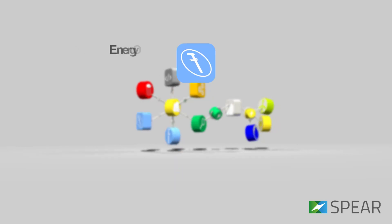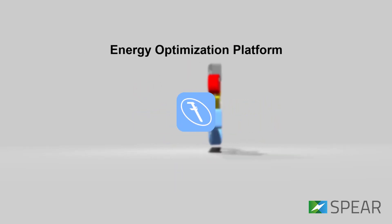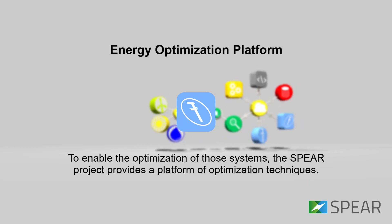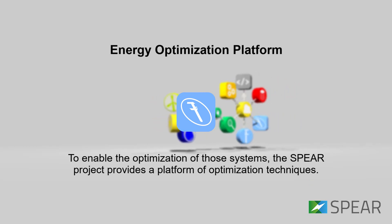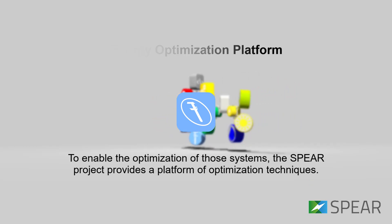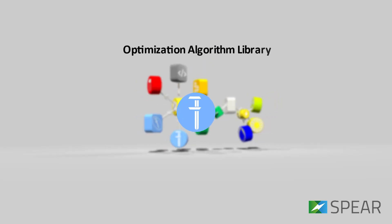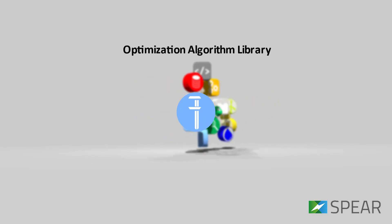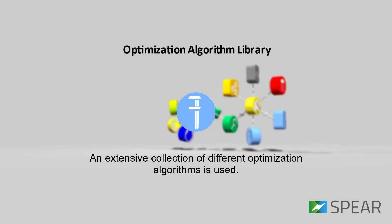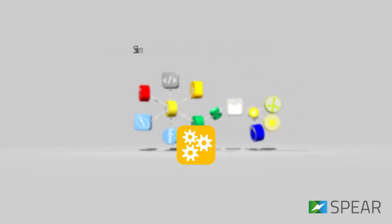The Energy Optimization Platform: To enable the optimization of those systems, the SPEAR project provides a platform of optimization techniques. An extensive collection of different optimization algorithms is used.